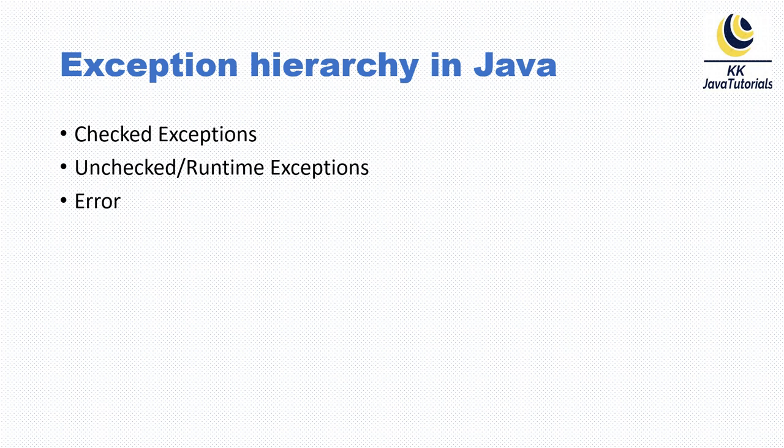When we talk about the exception hierarchy, exceptions are at the top level divided into three categories: checked exceptions, unchecked or runtime exceptions, and errors. Let's try to understand each of these aspects.